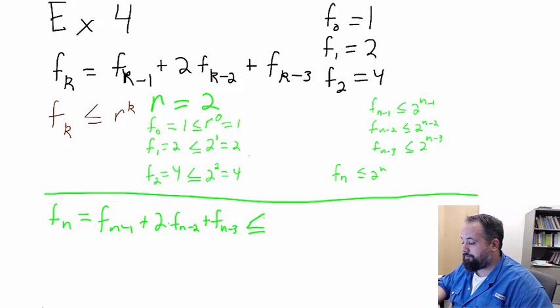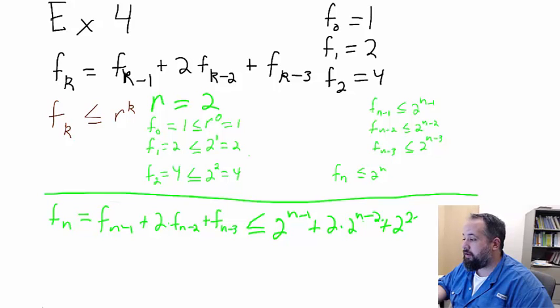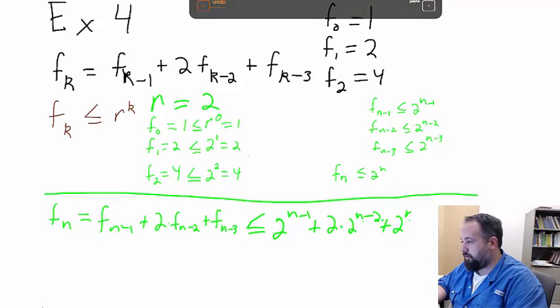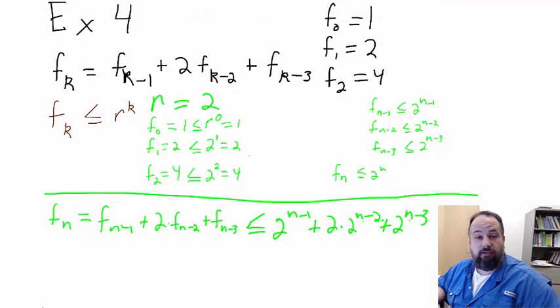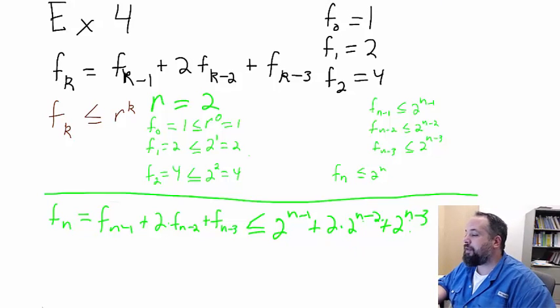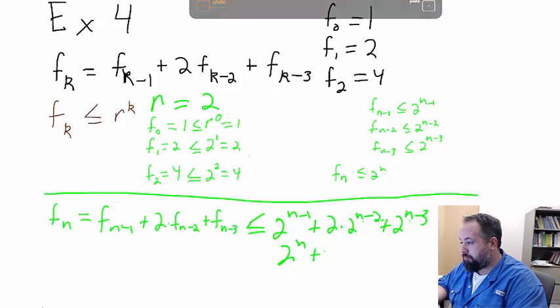Now, that is less than or equal to 2 to the n minus 1 plus 2 times 2 to the n minus 2 plus 2 to the n minus 3. Again, this is all by definition. This, if we do a little algebra, reduces down to 2 to the n plus 2 to the n minus 3.